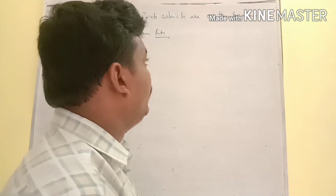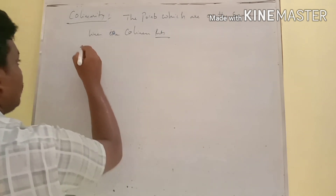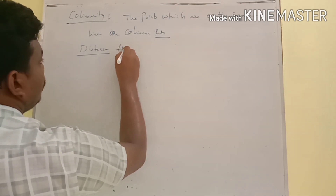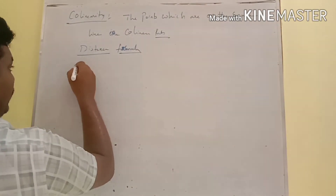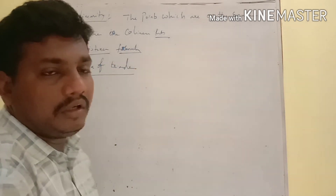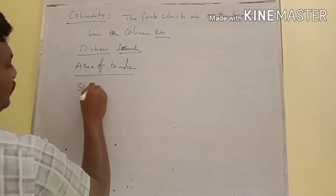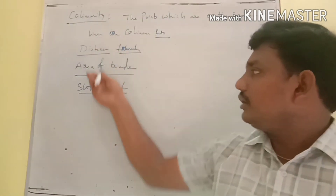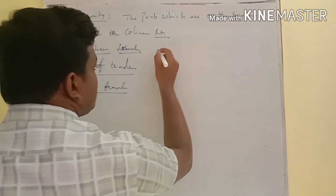In coordinate geometry, we can verify collinear points in several ways. First, by using the distance formula — the distance formula is used to find whether the given points are collinear or not. Second, the area of triangle formula is also used to find whether the given points are collinear or not. Third, the slope formula.